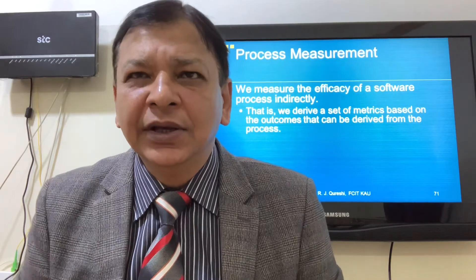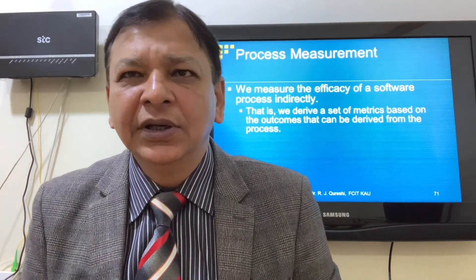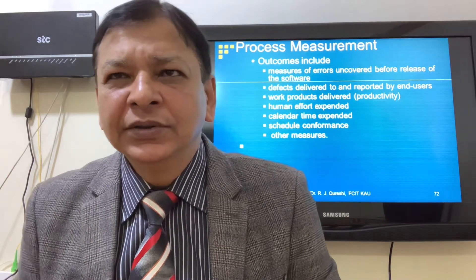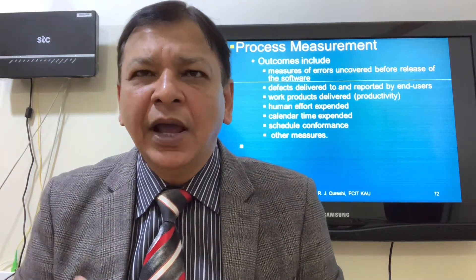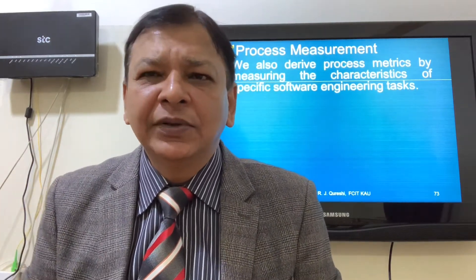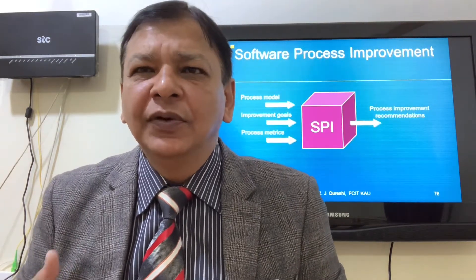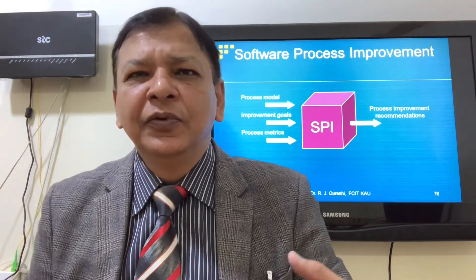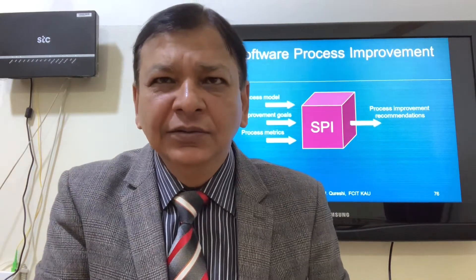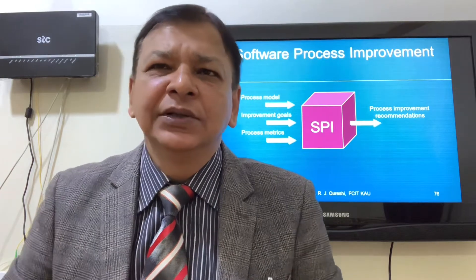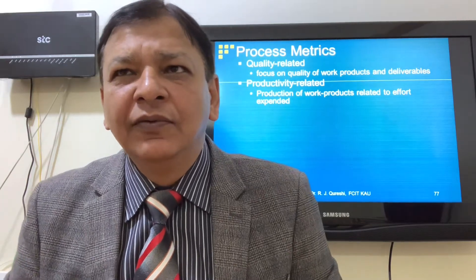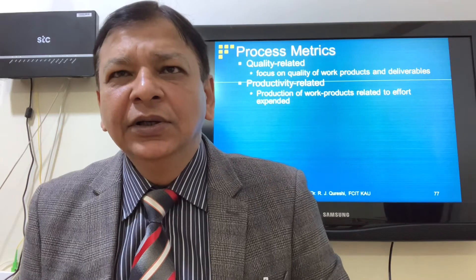We have KPA (Key Process Areas) and KPIs (Key Performance Indicators) for process measurement. The outcomes include measures of errors, defects, work products delivered in terms of productivity, calendar time, schedule conformance. We also derive process metrics by measuring the characteristics of specific software engineering tasks. Software process improvement involves process model improvement goals, process metrics, and process improvement recommendations.